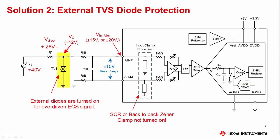This slide shows a scheme that uses an external bidirectional TVS diode and a series current limiting resistor, shown as RP. This type of protection can be used for both back-to-back Zener and SCR type input protection. The key point here is that the external voltage is clamped to a level that prevents the internal clamp from turning on. For example, if a 40 volt overstress signal is applied to the input and an external bidirectional TVS diode is used, the input will be clamped to 12 volts, and 28 volts will be dropped across the current limiting resistor RP. The purpose of RP is to make sure that the current into the TVS diode is not too high. During an overstress event, no current flows through RFilt or into the internal protection clamps.